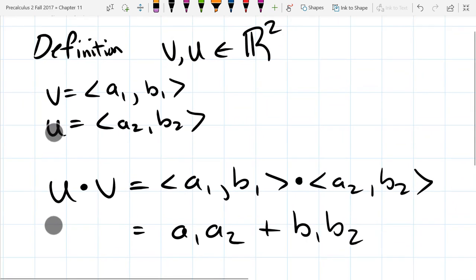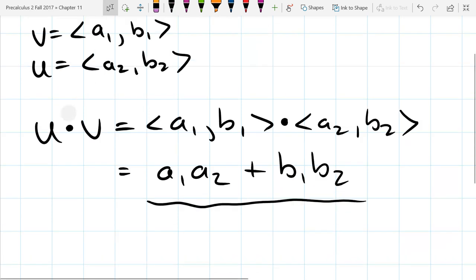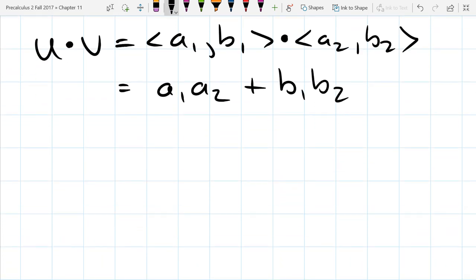Is this going to give us a vector or a number? This last line here, is that a vector or a number? That'll be a number. So it's a little strange. You're going to dot product two vectors and you're going to get a number out of it. So you're going to multiply two things and get something that's different.